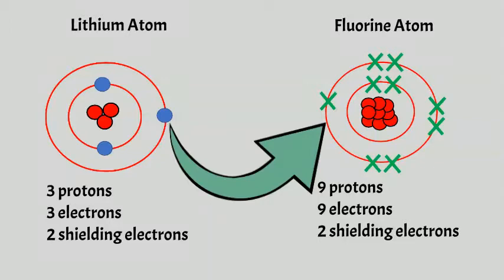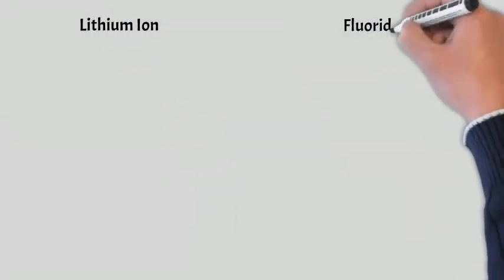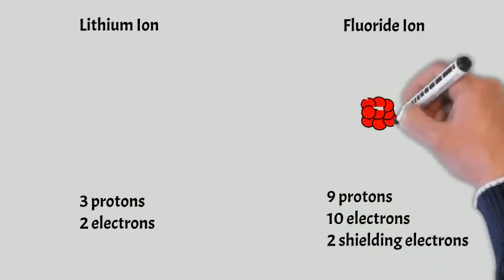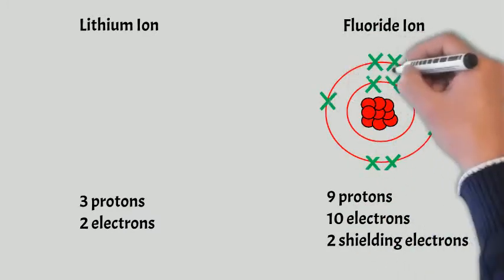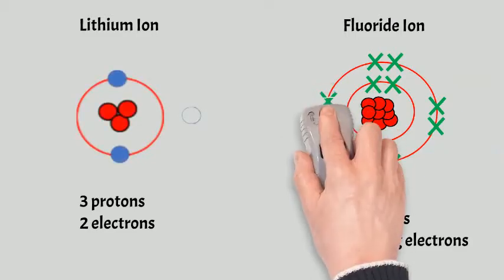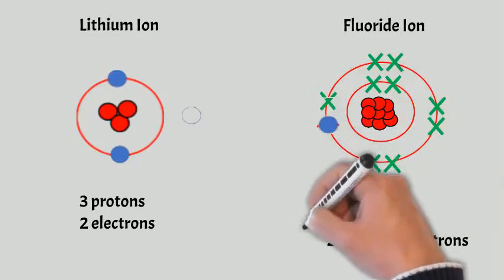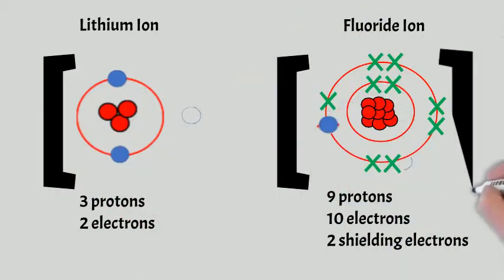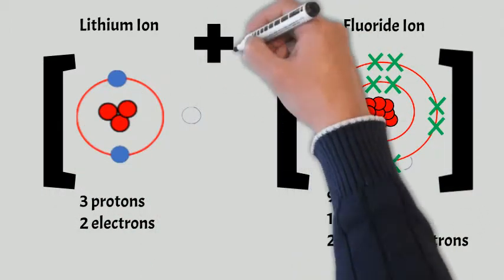So the nucleus, the positive nucleus of fluorine is going to attract lithium's electron away from the lithium atom and into fluorine's outermost shell. And that's why we have ionic bonding. And of course, we will end up with a lithium ion and a fluoride ion. Lithium ion is going to be positively charged, and my fluoride ion is going to be negatively charged because he's gained lithium's electron.